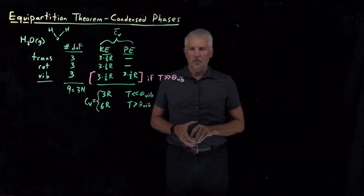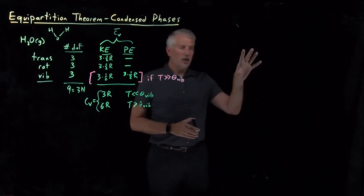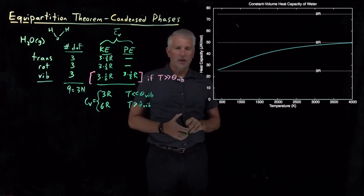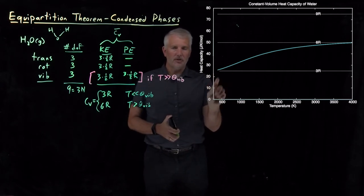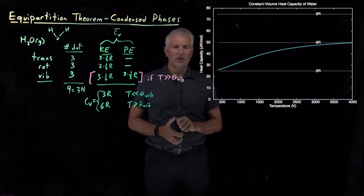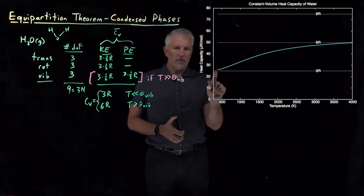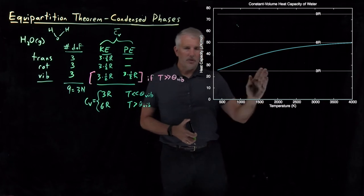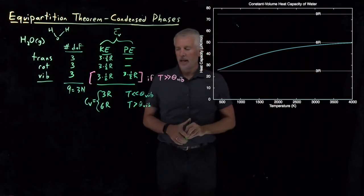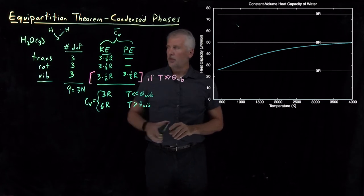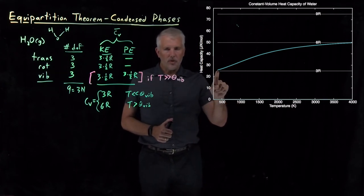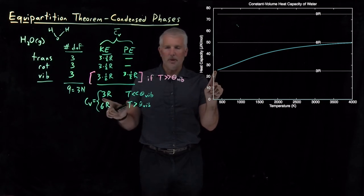We can check this prediction against actual data for gaseous water. Looking at a graph of heat capacity versus temperature, the equipartition theorem works pretty well at relatively cold temperatures — around 500 Kelvin — where the heat capacity is fairly close to 3R. At high temperatures of two to four thousand Kelvin, the heat capacity approaches 6R, beginning to plateau at the value predicted by the equipartition theorem.